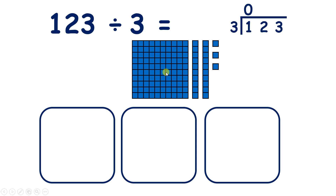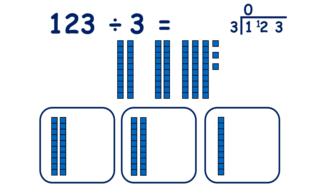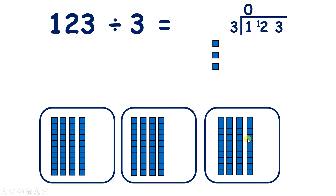What can we do with this remaining 100? We can regroup it as 10 tens, or exchange our 100 for 10 tens. We need to move our 1 remaining 100 in front of our tens, because we've exchanged it for 10 tens, and since we had 2 tens to start with, that's given us 12 tens. Now let's share out those 12 tens — we now have 4 tens in each group, so we write 4 above our tens, because 12 divided by 3 is 4.